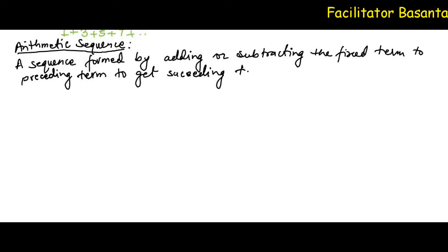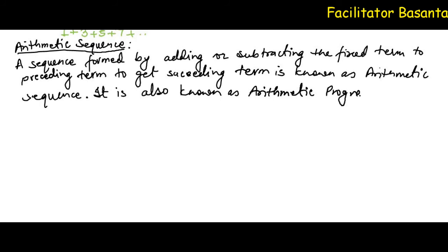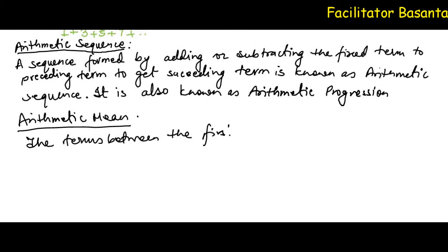The succeeding term is known as arithmetic sequence. It is also known as arithmetic progression. Similarly, arithmetic mean refers to the terms between the first and last terms.